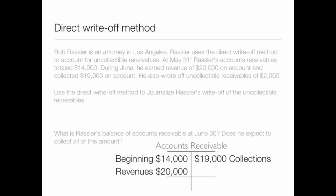Let's look at Bob Rassler, who is an attorney in Los Angeles. Rassler uses the direct write-off method to account for uncollectible receivables. At May 31st, Rassler's accounts receivable totaled $14,000. During June, he earned revenue of $20,000 on account and collected $19,000 on account. He also wrote off uncollectible receivables of $2,000.